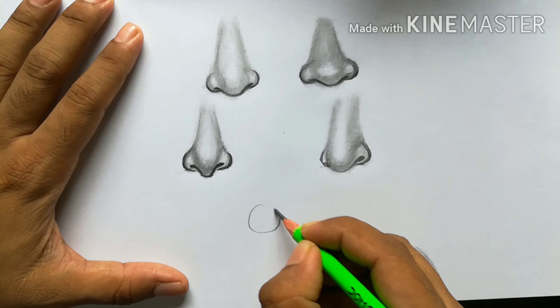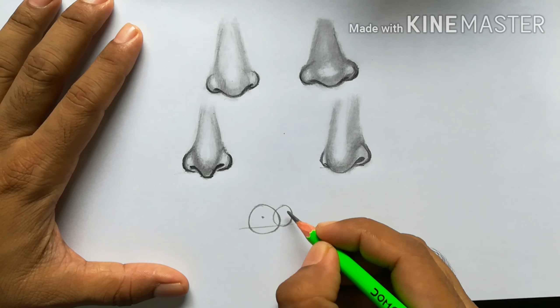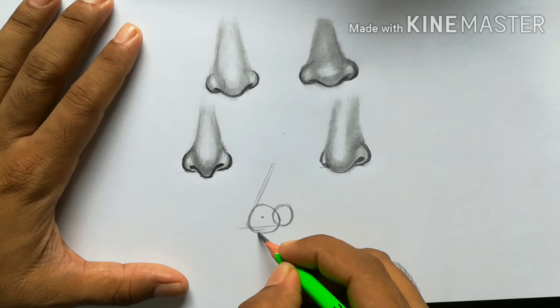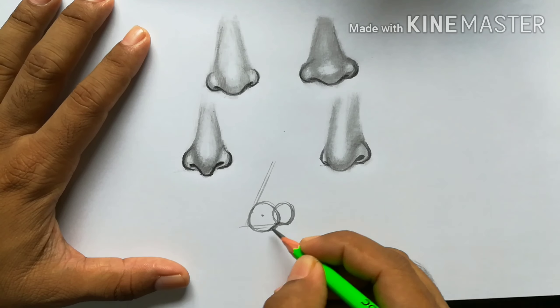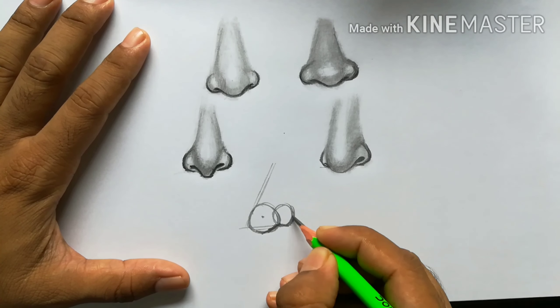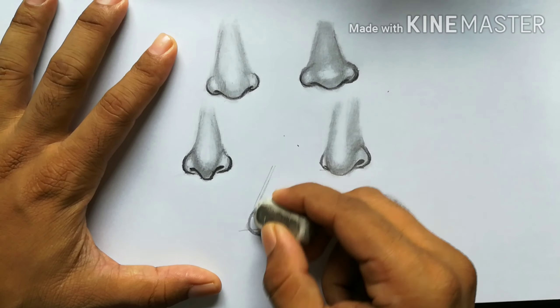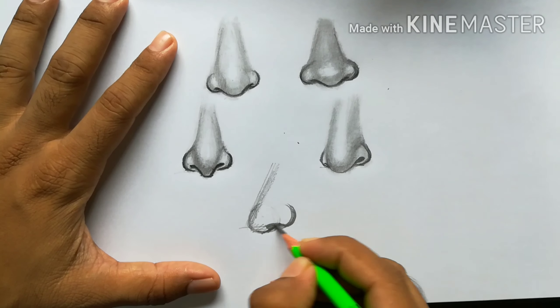In this example, we're going to draw another side view nose. So here we have to draw a bigger circle and only one smaller circle. Why? Because here we're not able to see the other side of the nose, right? So we just need to draw only one smaller circle.